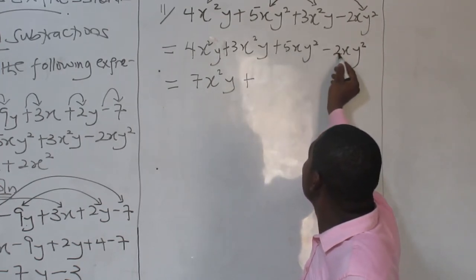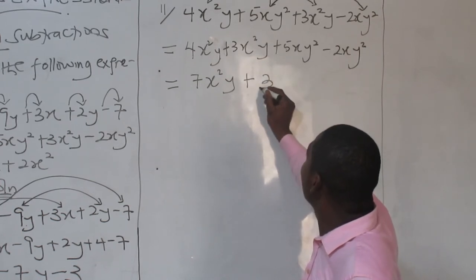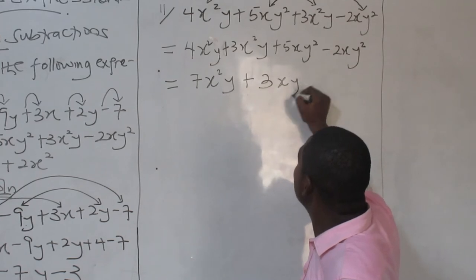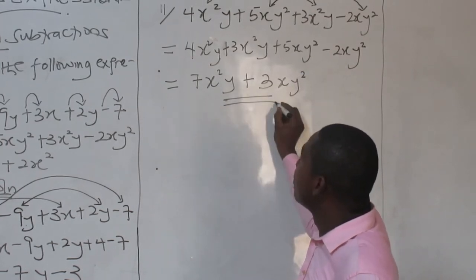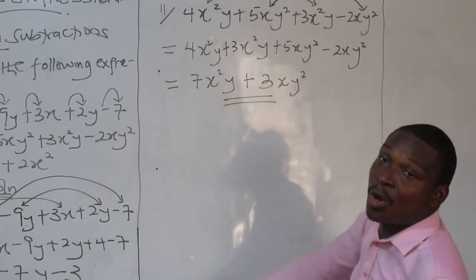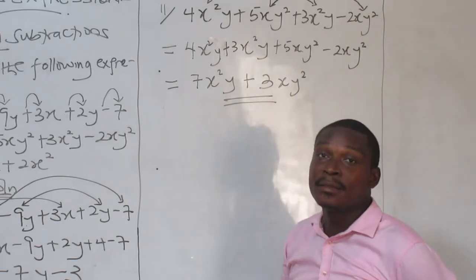There is also 5 minus 3. You get 2. There is x. I factor 1. I stop here. Because there is no way I can add 7x squared y plus 3xy squared. They are not compatible.